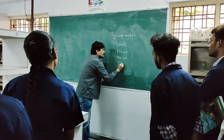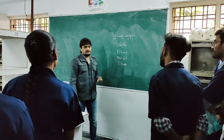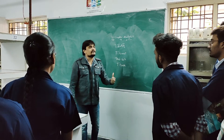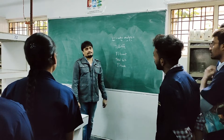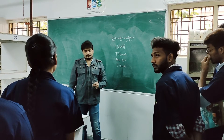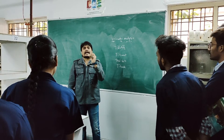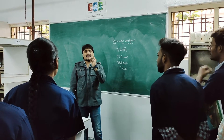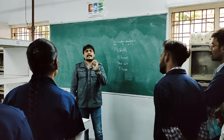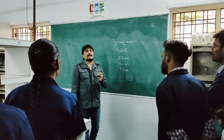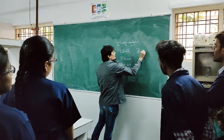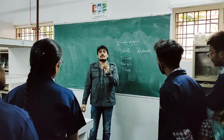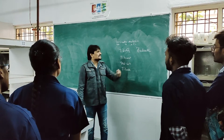The next term is titrand. The substance whose concentration is unknown is called titrand. Now, in order to recognize the end point of the titration, we need to add one external agent. That external agent is useful to recognize the end point of the titration — that is nothing but indicator. The substance which is used to recognize the end point of the titration is called as indicator.